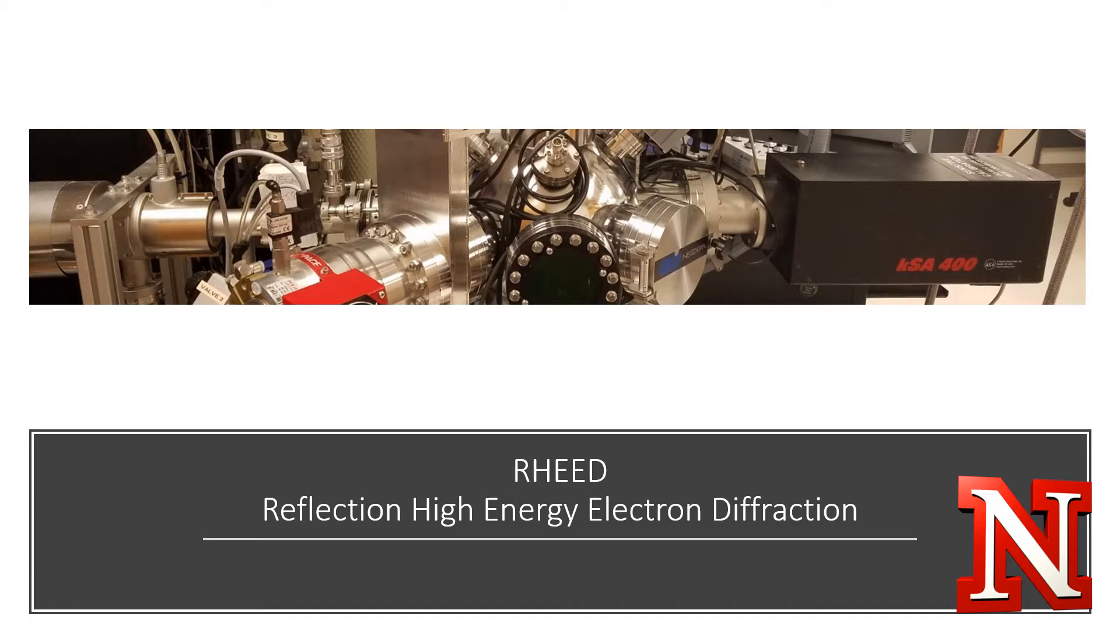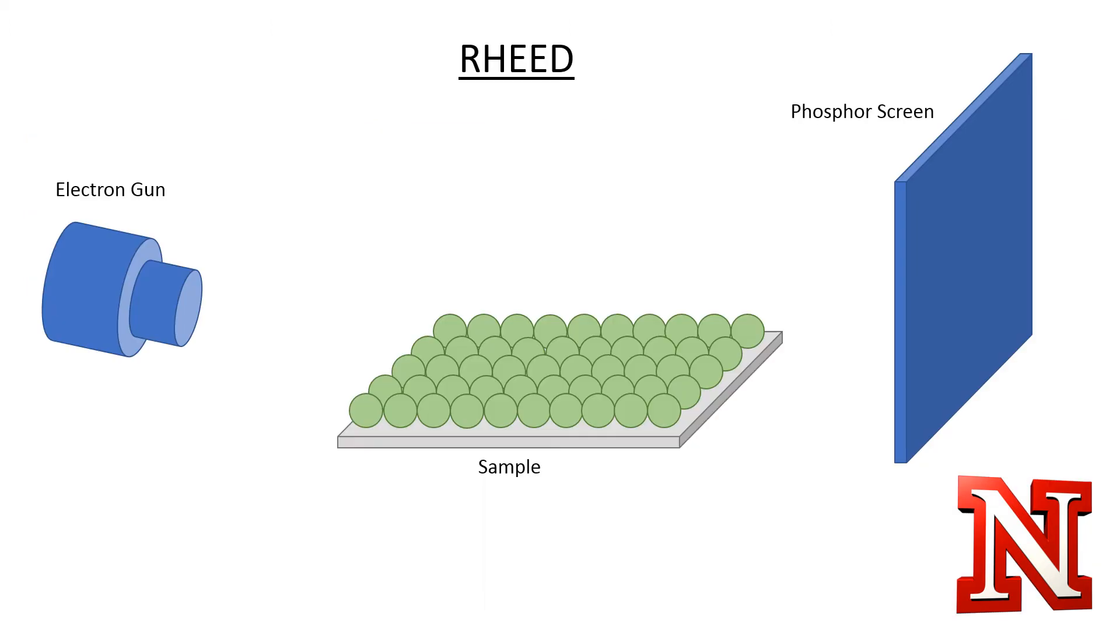This image is of the RHEED used in the PLD system. A typical RHEED apparatus includes an electron gun in the range of 10 kilovolts to 30 kilovolts and a phosphorous screen as a detector.